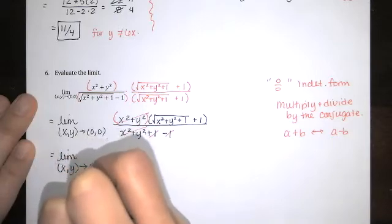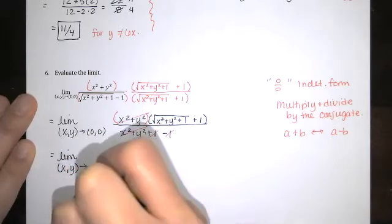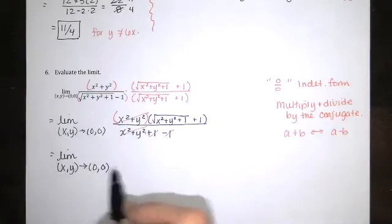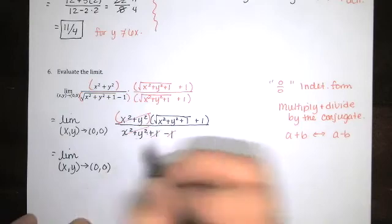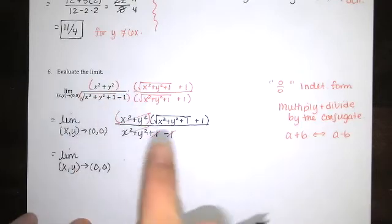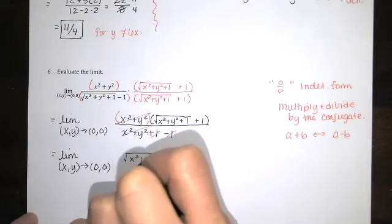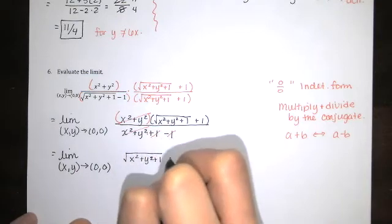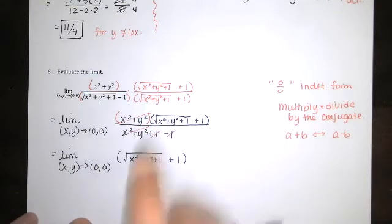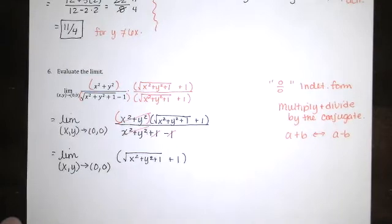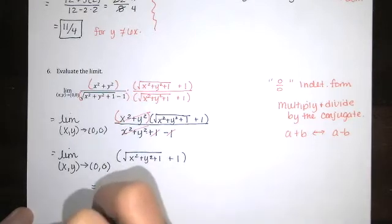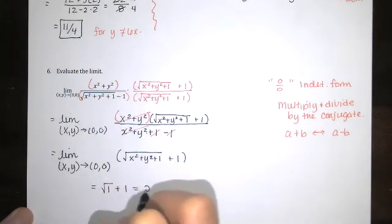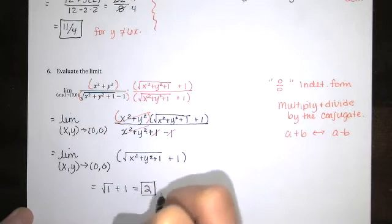Remember when you're taking a limit, x, y is not actually equal to that value. We're just getting very, very close to that ordered pair. And we're seeing what happens to the z values on our graph. So the limit of this function is the same as the limit of this function. The question is, is this function continuous at 0, 0? And I think we can all see it is. It's just going to be the square root of 1 plus 1, which is 2.